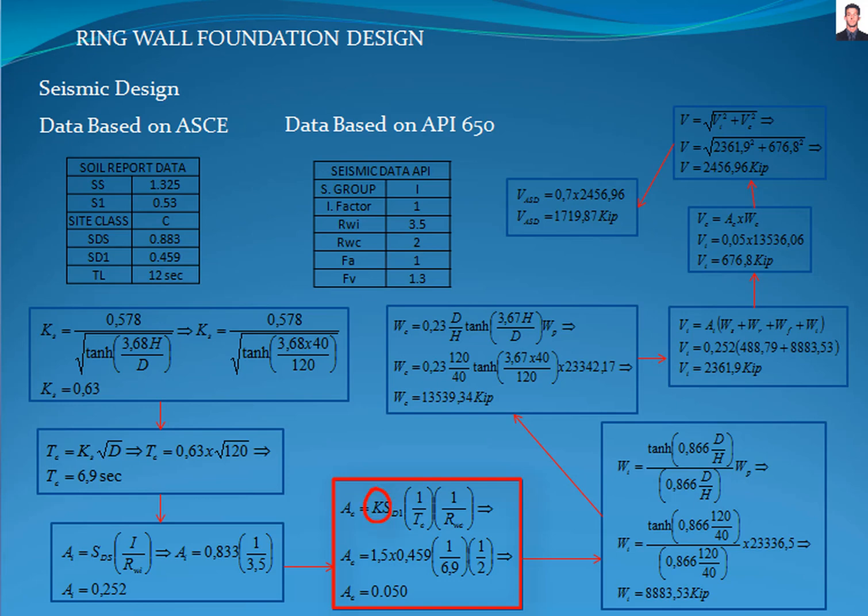Where K is a coefficient to adjust the spectral acceleration from 5% to 0.5% and is equal to 1.5, resulting in 0.05.